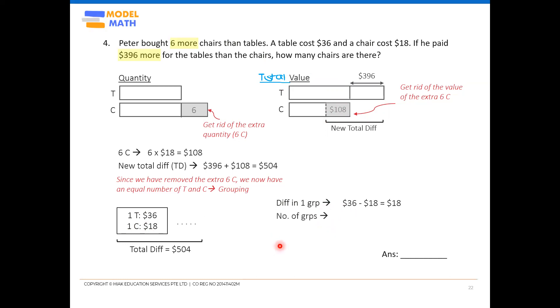Next step, of course, find number of groups. Okay. So to find number of groups, you have to take the total difference value divided by the difference per group. Okay. So now I know I have 28 of such groups.